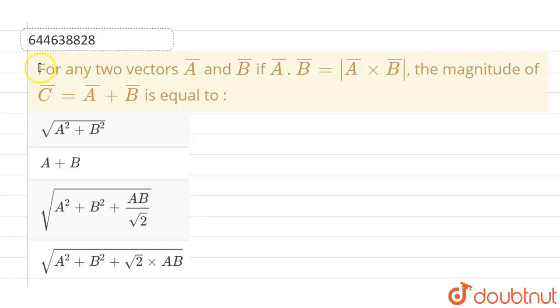Hello everyone. If we talk about this question, the given question is: for any two vectors A vector and B vector, if A vector dot B vector equals magnitude of A cross B vector, then the magnitude of C vector, which is A vector plus B vector, will be equal to, and these are the given options.